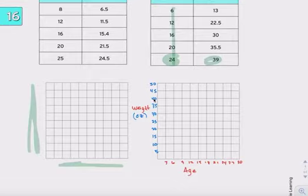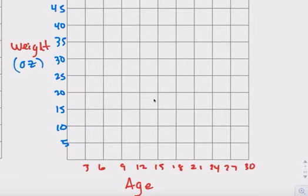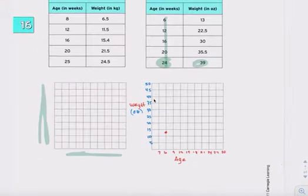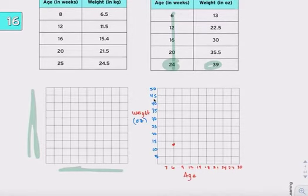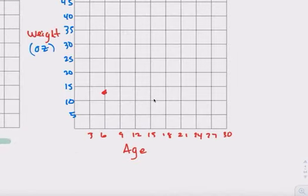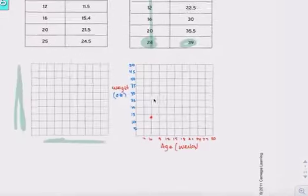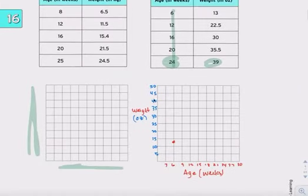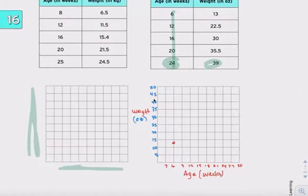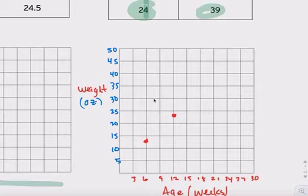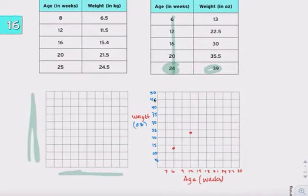All right. Our first one is 6 and 13. 6 and 13 is about right there. At 6, 13 ounces. This must be a little animal. Oh, in weeks. I'm thinking years. Age in weeks. So that's, at 6 weeks, it's 13 ounces. It could be anything. 12 is 22.5. This is more realistic because your weight gain isn't always the same each time. You don't gain 5 pounds every week. So different.